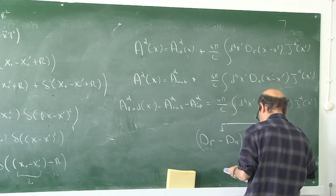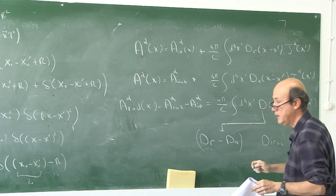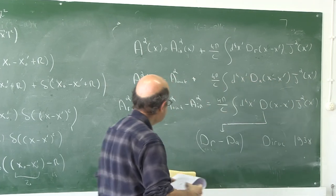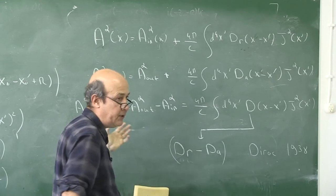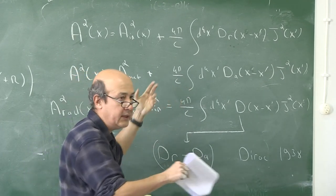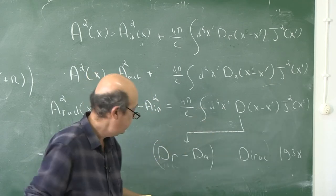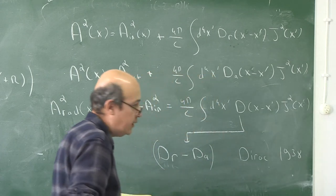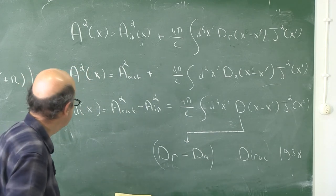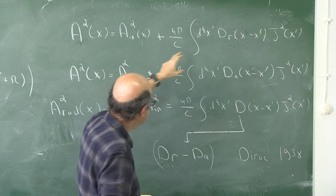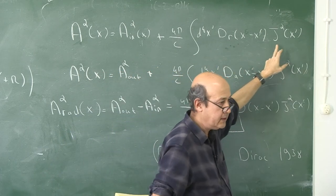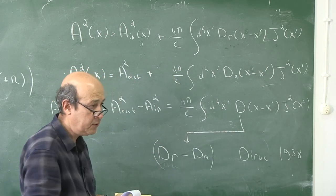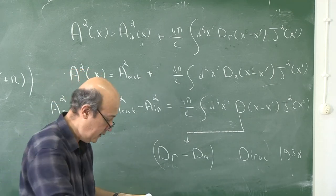You can look at Dirac's 1938 paper for details on this proposal. In our applications, however, we will use the retarded Green's function convolved with the four-current density to calculate the four-potential. Once we have the four-potential, we calculate the field strength tensor and the fields.